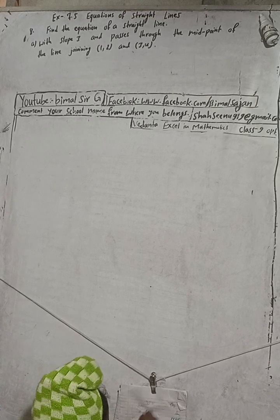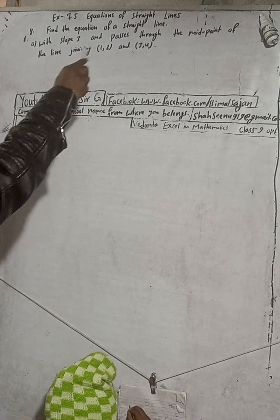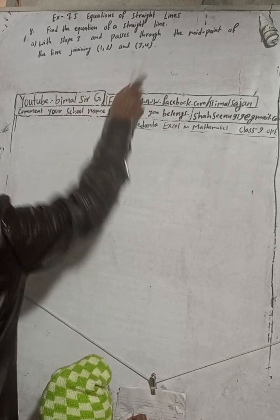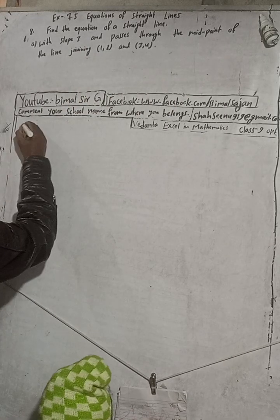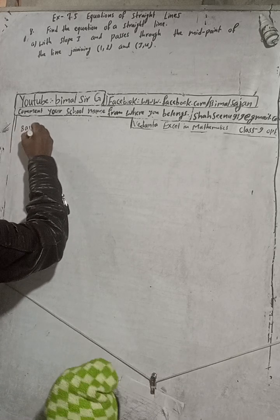Hi class 9 and 10 students, welcome back to Bimal Sarji's YouTube channel. This is question number 8a, exercise 7.5: equations of straight lines, Vedanth Excel in Optional Mathematics class 9. Don't forget to check the playlist, and if you don't find any solutions then comment so I can help you. The question is: find the equation of a straight line with slope 3 that passes through the midpoint of the line joining (1,2) and (3,4).